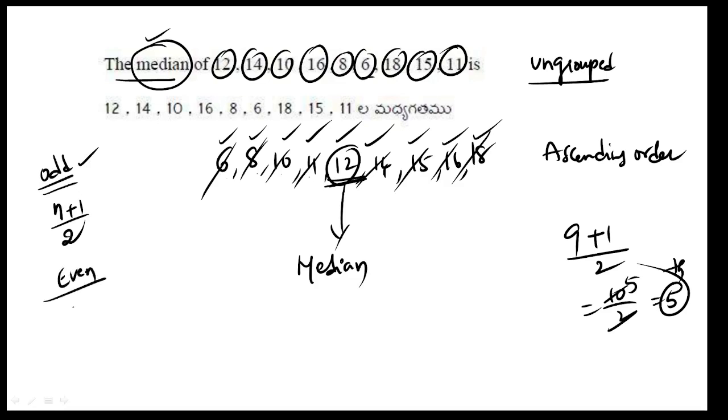For even number of terms, the formula is n by 2 comma n by 2 plus 1. That means for even terms, the middle term consists of two numbers.